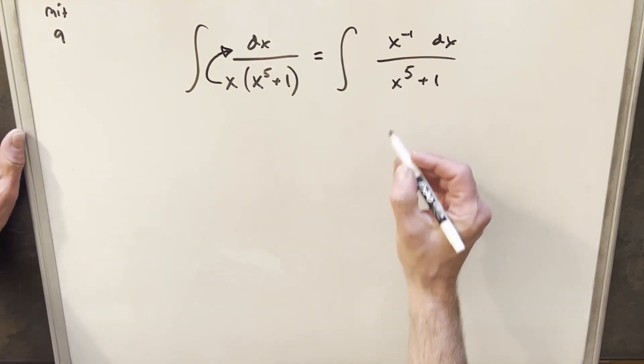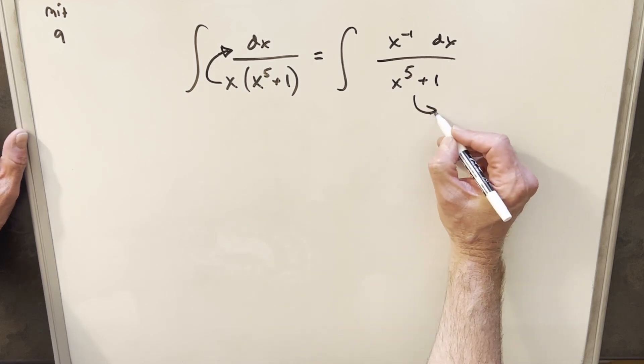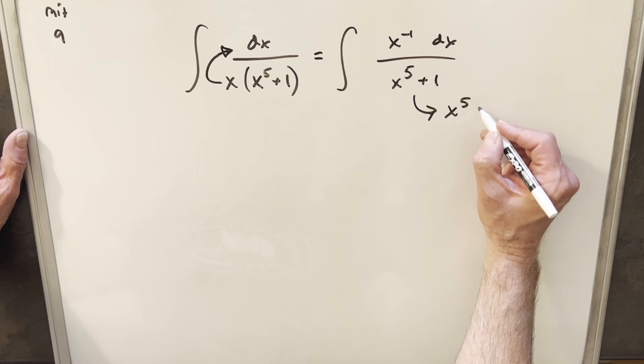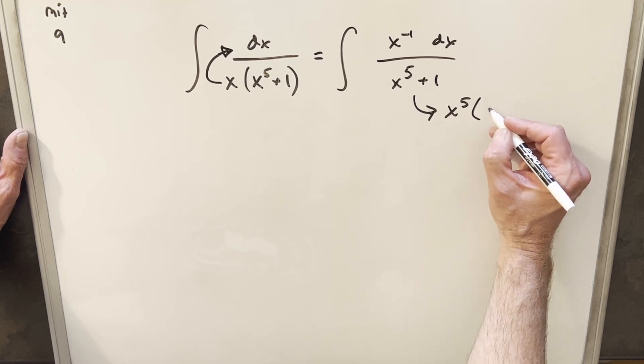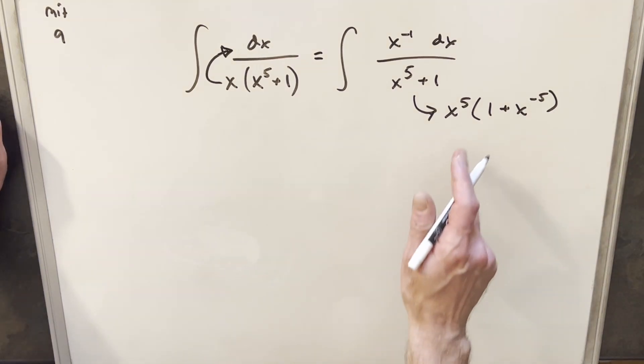But what I can do is, let's rewrite this denominator. I can factor out an x to the 5th. So how I'm going to rewrite this, we'll factor out x to the 5th. And then we'll notice this is going to be 1 plus x to the minus 5th. So let me just rewrite this.